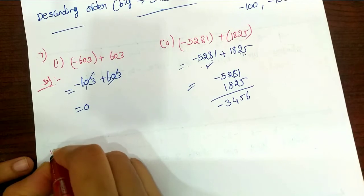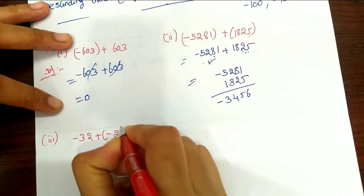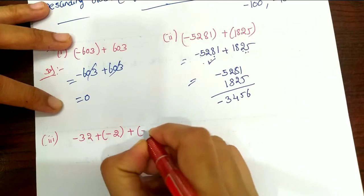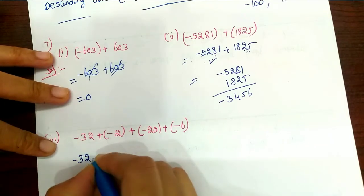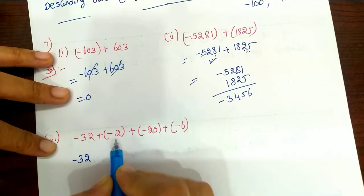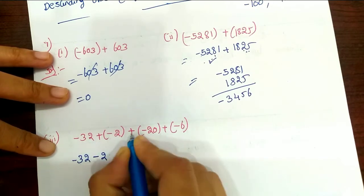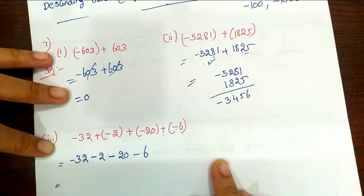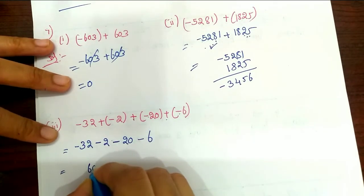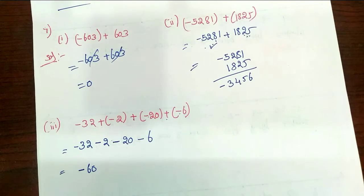Third one: minus 32 plus minus 20 plus minus 60. Two opposite symbols multiply to give minus, same symbols multiply to give plus. So plus into minus gives minus 20, plus into minus gives minus 60. Adding all negative values: minus 32, minus 20, minus 60, the result is negative. That's it. This video is complete — please like and share.